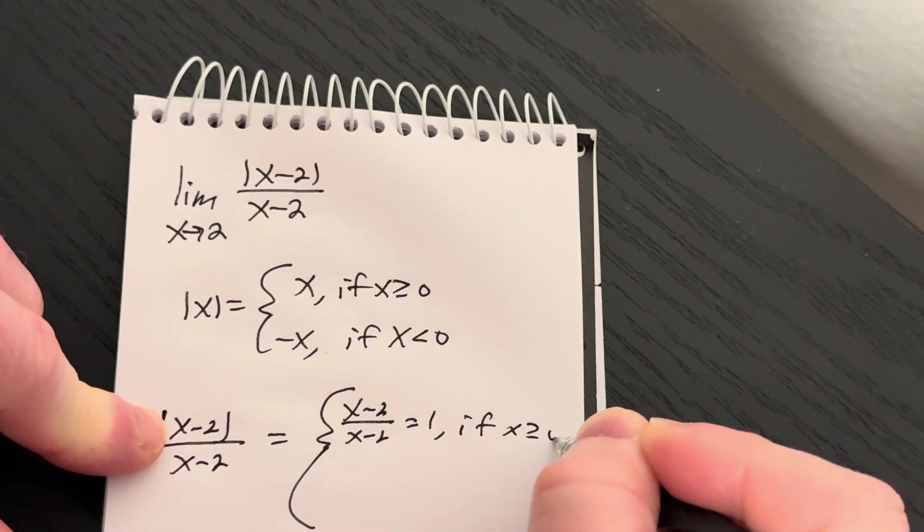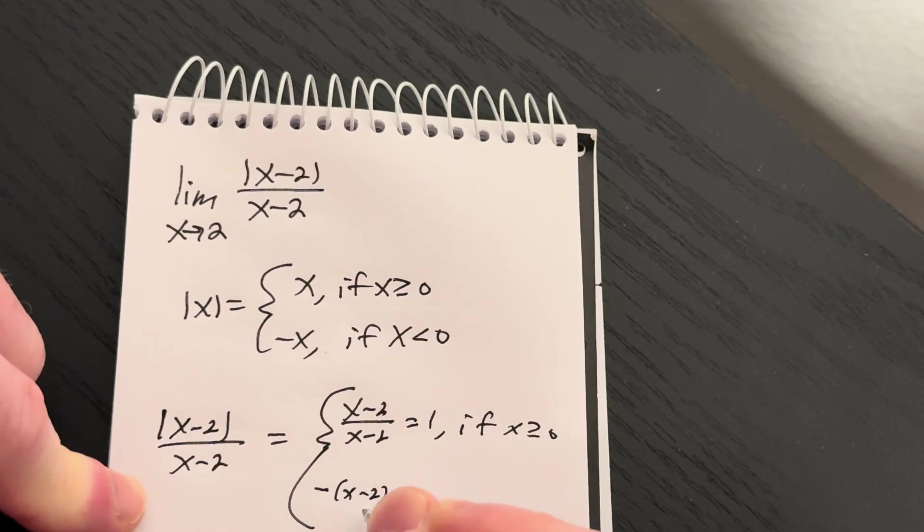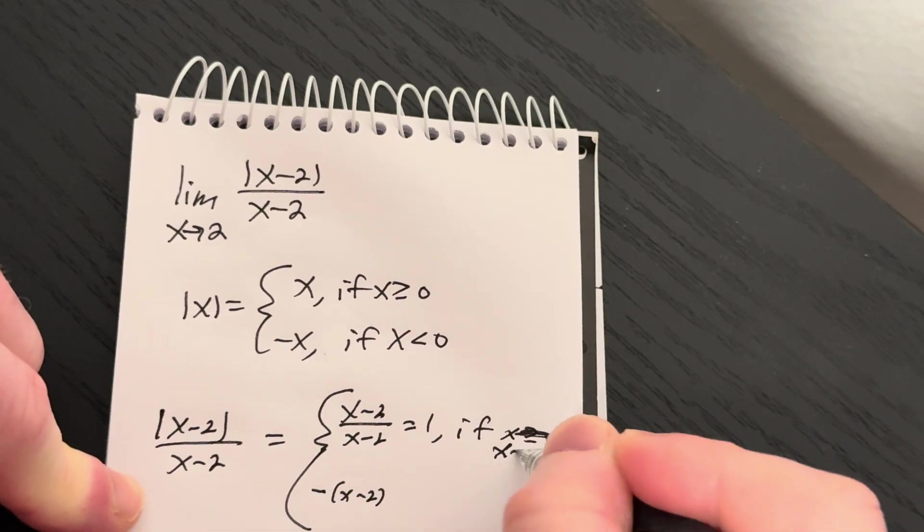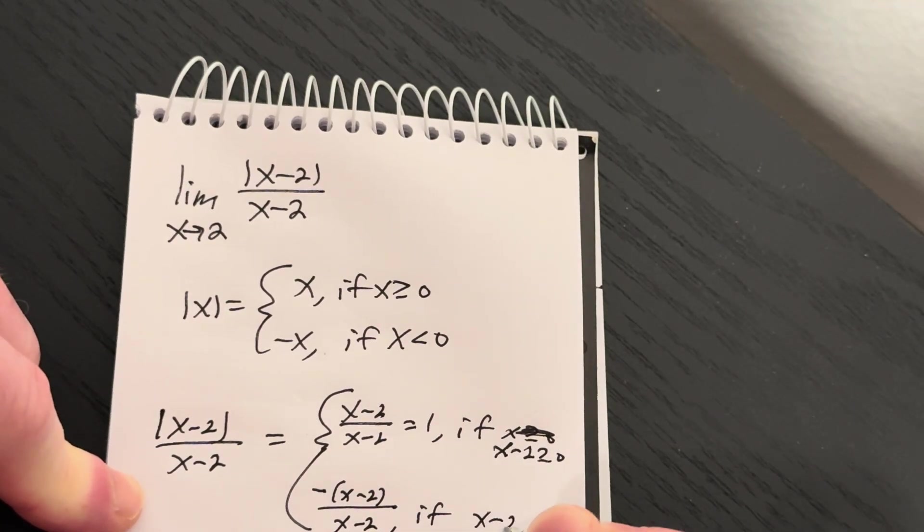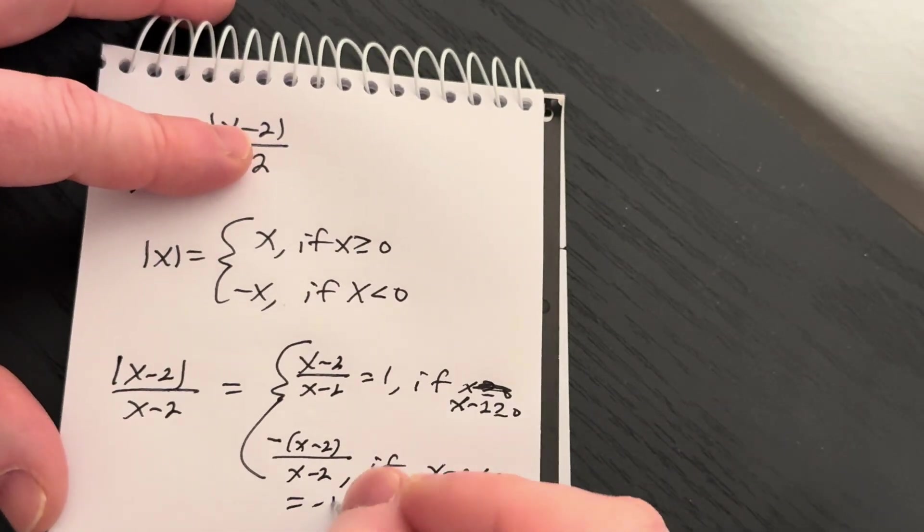If x is greater than or equal to 0, it'll be minus x minus 2, minus x minus 2 over x minus 2 if x minus 2 is less than 0. So that's minus 1.